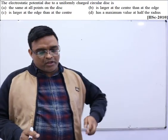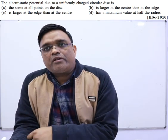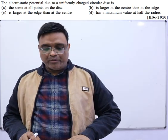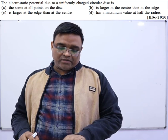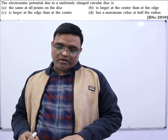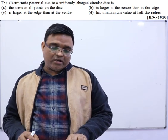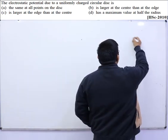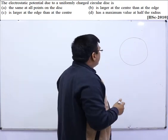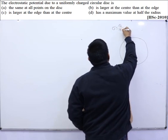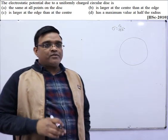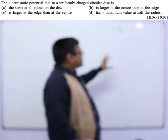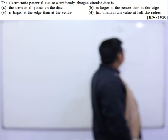Let's go to the next question. We have to compare the electrostatic potential at the center of a disc and on the edge of the disc. The question asks: the electrostatic potential due to a uniformly charged circular disc is — (A) the same at all points on the disc, (B) larger at the center than at the edge, (C) larger at the edge than at the center, or (D) maximum at half the radius. We have charge q distributed over the disc, so σ = q / πr².